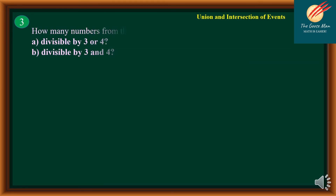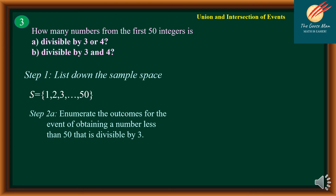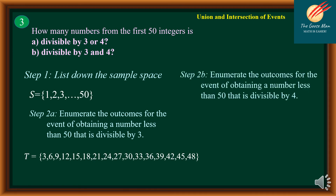Let's move on to problem number 3. How many numbers from the first 50 integers are divisible by 3 or 4, and divisible by 3 and 4? Step number one is to list down the sample space — all integers from 1 to 50. Step two is to enumerate the outcomes for the event of obtaining a number less than or equal to 50 that is divisible by 3: we have 3, 6, 9, 12, continuing until 48.